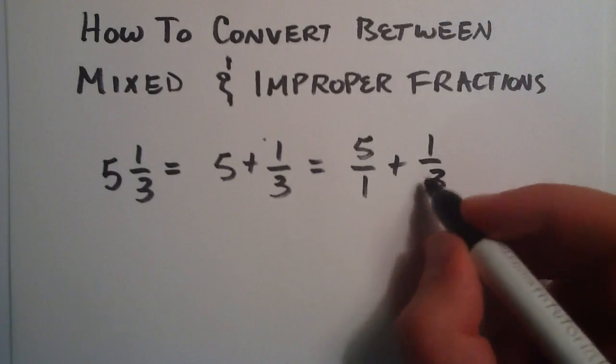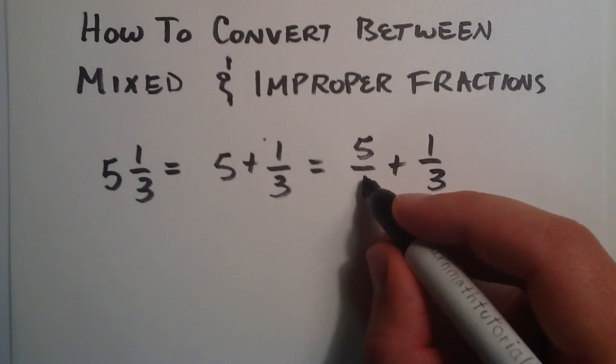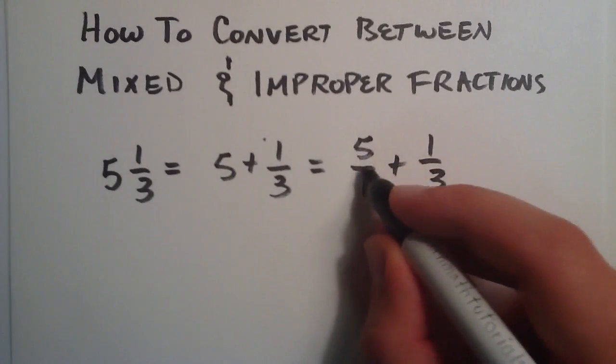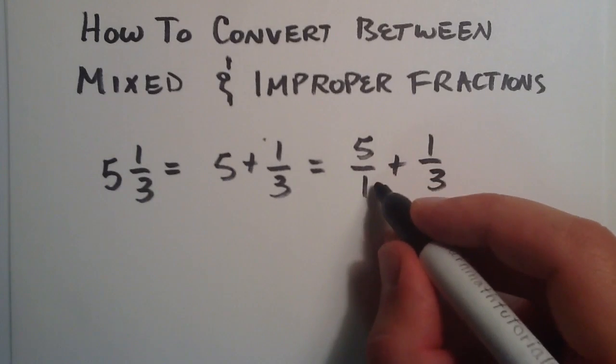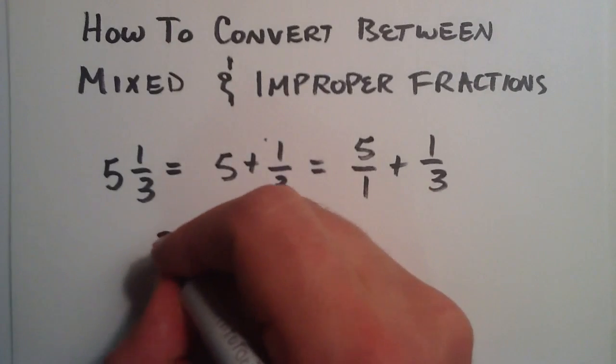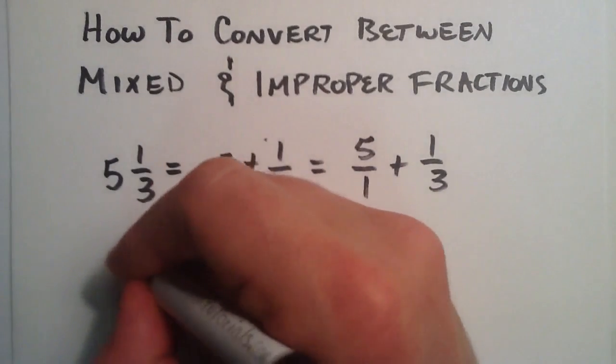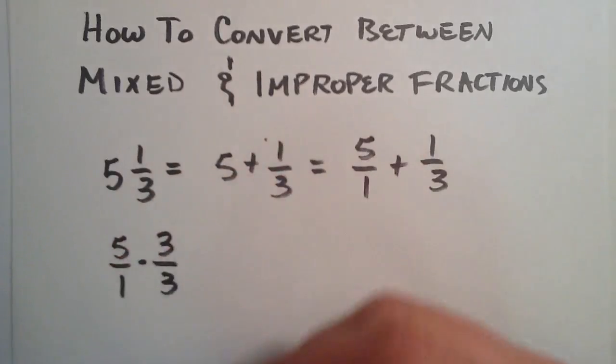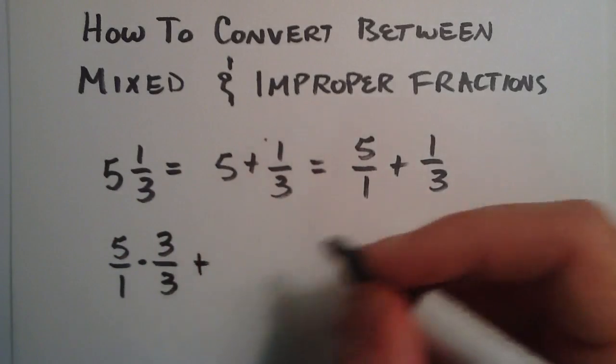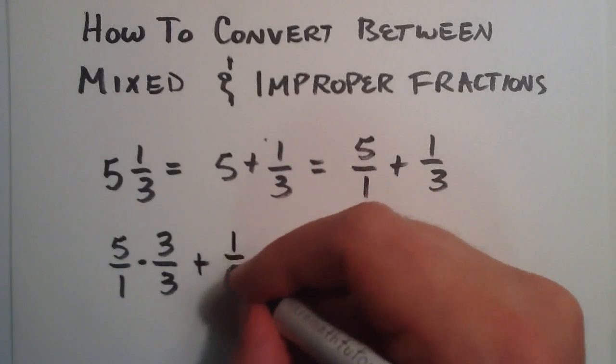We want to get the same common denominator, 3, in this term. So we can just multiply this by the number 1, and it won't change anything. And 3 divided by 3 is really just the number 1. So we multiply that by the 5 over 1, and then we add our second term, 1 third.